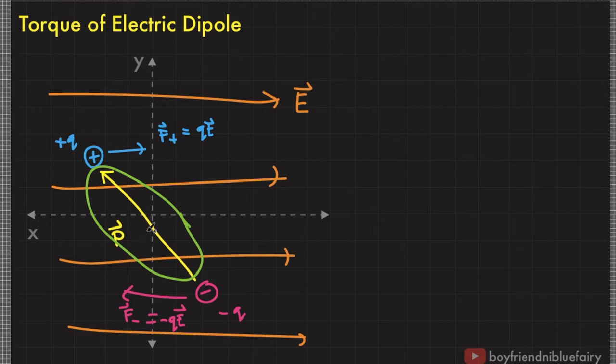To derive an expression that quantitatively describes the ability of the electric field to rotate the electric dipole, we calculate the net torque experienced by the dipole. The net torque experienced by the dipole is equal to the torque applied on the positive charge and the torque applied on the negative charge.